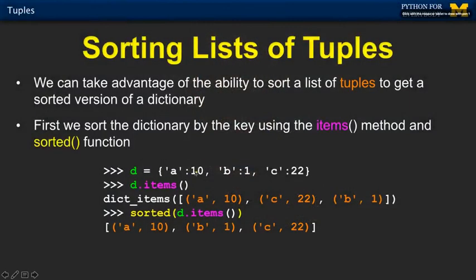So if we go back to looking at the items: remember that dictionaries aren't always the same order. But if we look at dictionary items — d.items() — then we get tuples. A:10, C:22, B:1. Now what we can do is we can say we would like to make a sorted copy of this. So we pass this into the sorted function and we get back a sorted list, and it sorts it based on the first element.